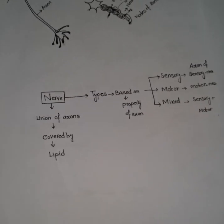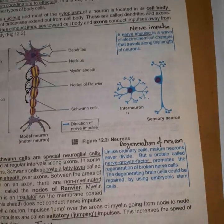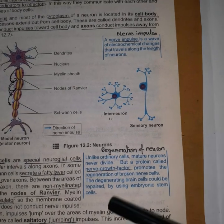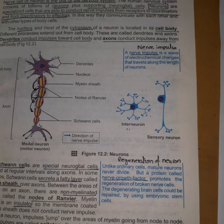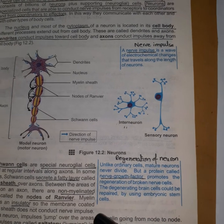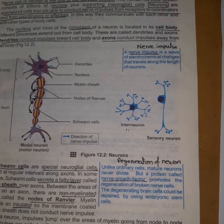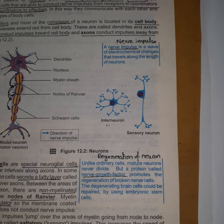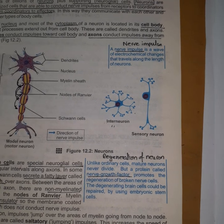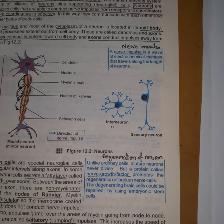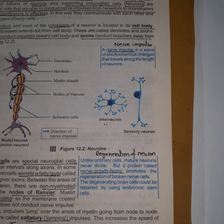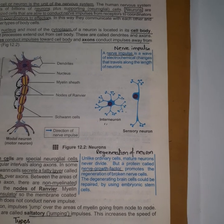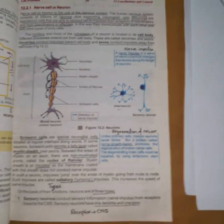One more thing to discuss is the regeneration of the neuron. When neurons are mature, they do not divide. However, a protein called the nerve growth factor can regenerate the broken part of the neuron. This regeneration of brain cells also occurs through stem cells that form these neurons.